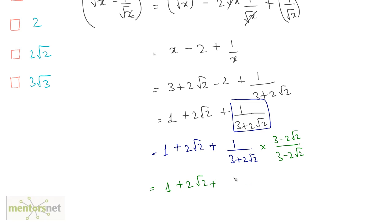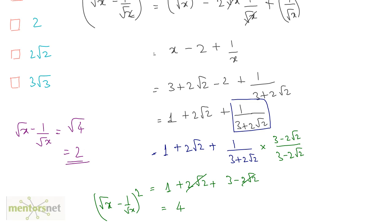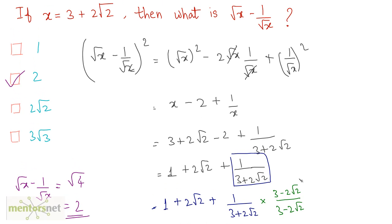The rest of the terms remain as they are: 1 plus 2 root 2 plus 3 minus 2 root 2, divided by 3 squared minus (2 root 2) squared, which is 9 minus 8 equals 1. So the fraction simplifies to 3 minus 2 root 2. Now, 2 root 2 and minus 2 root 2 cancel, and 1 plus 3 is 4. Since this is the value of (root x minus 1 by root x) squared, taking the square root of both sides gives root x minus 1 by root x equals root 4, which is 2. So option B is the right answer.